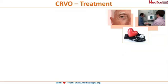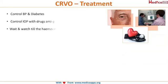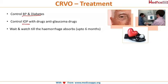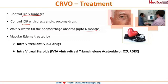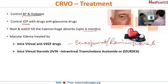To treat a patient diagnosed with CRVO, first you have to control the risk factors — control blood pressure and diabetes. Then you control the intraocular pressure with anti-glaucoma drugs. You wait and watch until the hemorrhage absorbs, and you can wait up to 6 months. With this conservative management, if resolution does not occur, you will treat the macular edema with intravitreal anti-VEGF drugs — that is bevacizumab or ranibizumab — or you can also give intravitreal triamcinolone or Ozurdex.